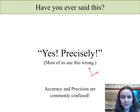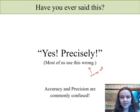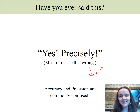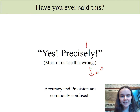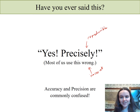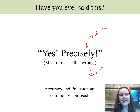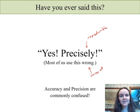So what am I trying to get here? That correct is accurate, precise is reproducible. Hopefully as you go forward with your life, you will now think every time somebody says yes precisely, you're using that wrong. The moral of the story here is that accuracy and precision are often confused with each other. So if you're struggling with keeping the two straight, it's understandable, but you do want to know the difference.